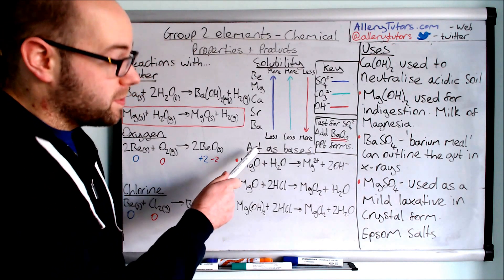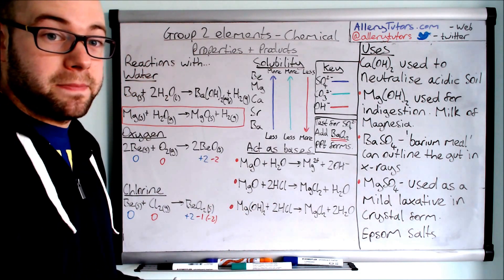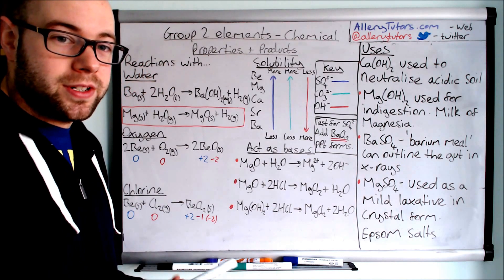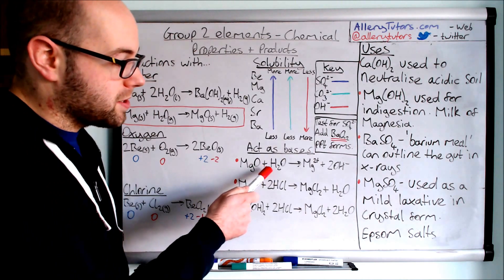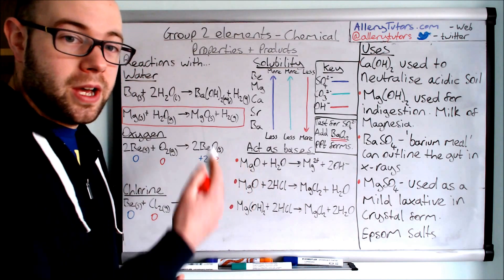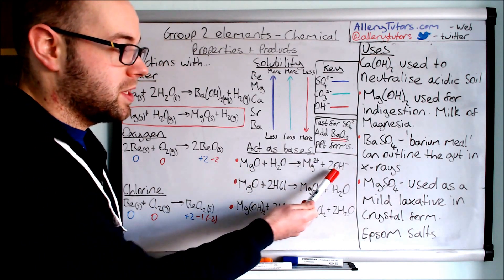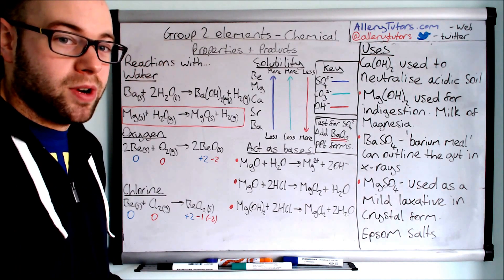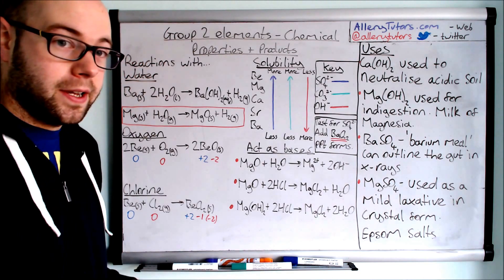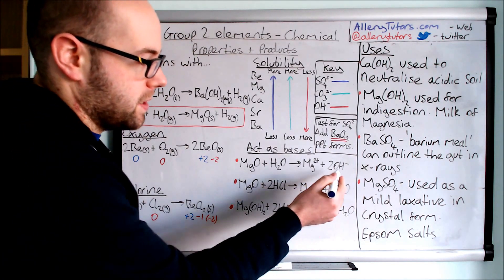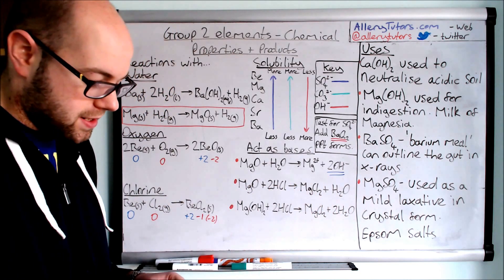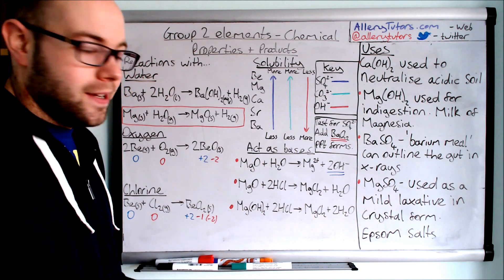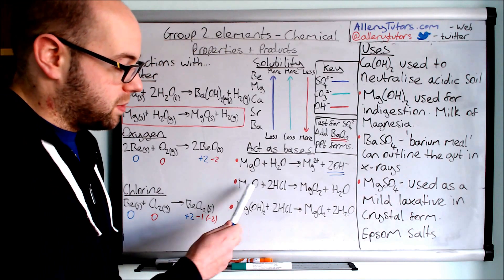Let's look at group 2 compounds reacting as a base. Oxides, hydroxides, and carbonates are all classed as bases. Magnesium oxide can react with water, and when dissolved it produces Mg²⁺ and OH⁻ ions. For something to be alkaline or act as a base, it needs hydroxyl ions present — and that's why it works, because these ionic compounds split up to give OH⁻. If we take magnesium oxide and react it with an acid, we always form salt plus water, which is the classic sign of a neutralization reaction. Any acid plus base gives salt plus water. The same applies for hydroxides.